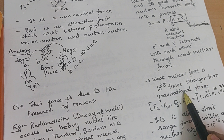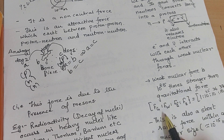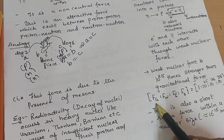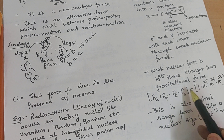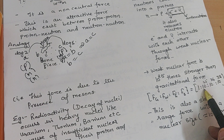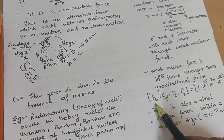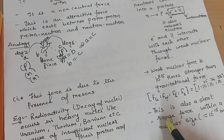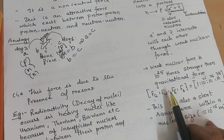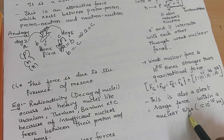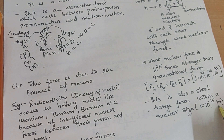This weak affinity or weak attraction we call the weak nuclear force. Weak nuclear forces are 10 raise to 25 times stronger than the gravitational force, since gravitational force is the weakest. So if gravitational is one, weak nuclear force is 10 raise to 25. However, weak nuclear forces are also short-range forces because they too occur only within nuclear size, that is 10 raise to minus 15 meters.